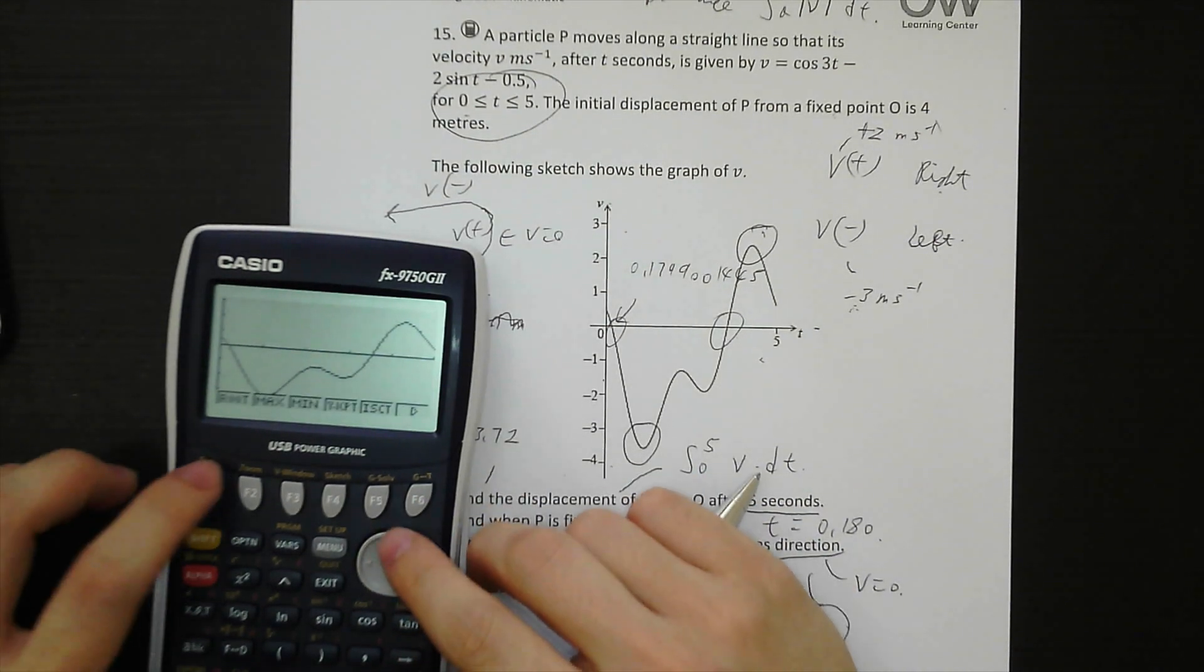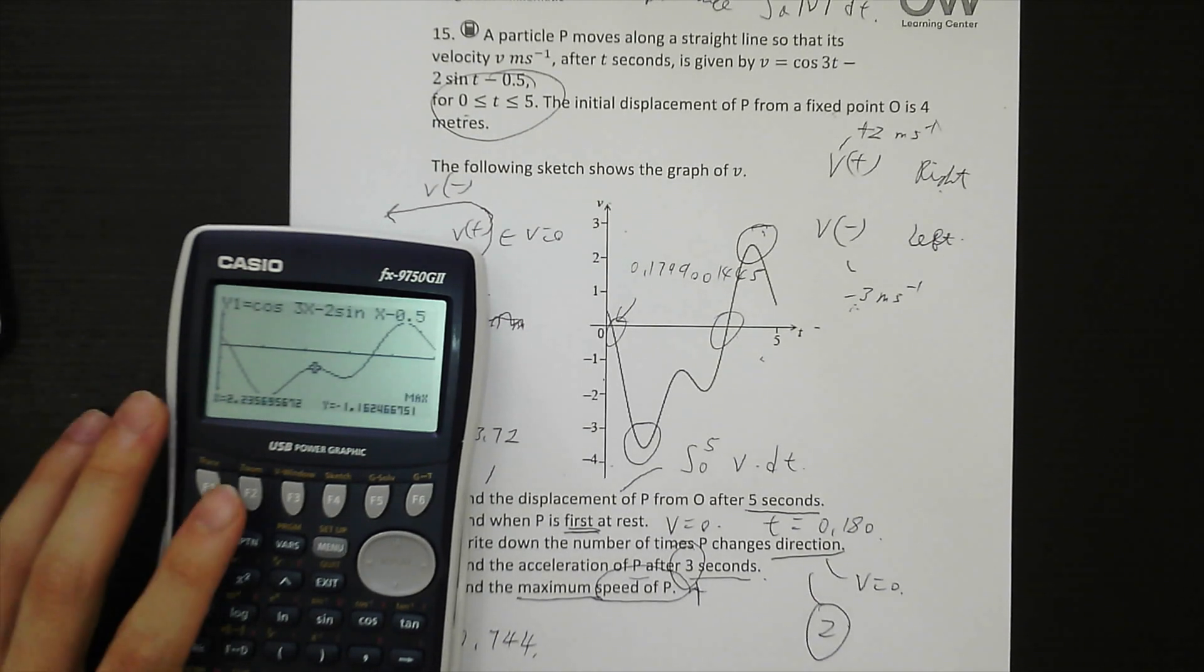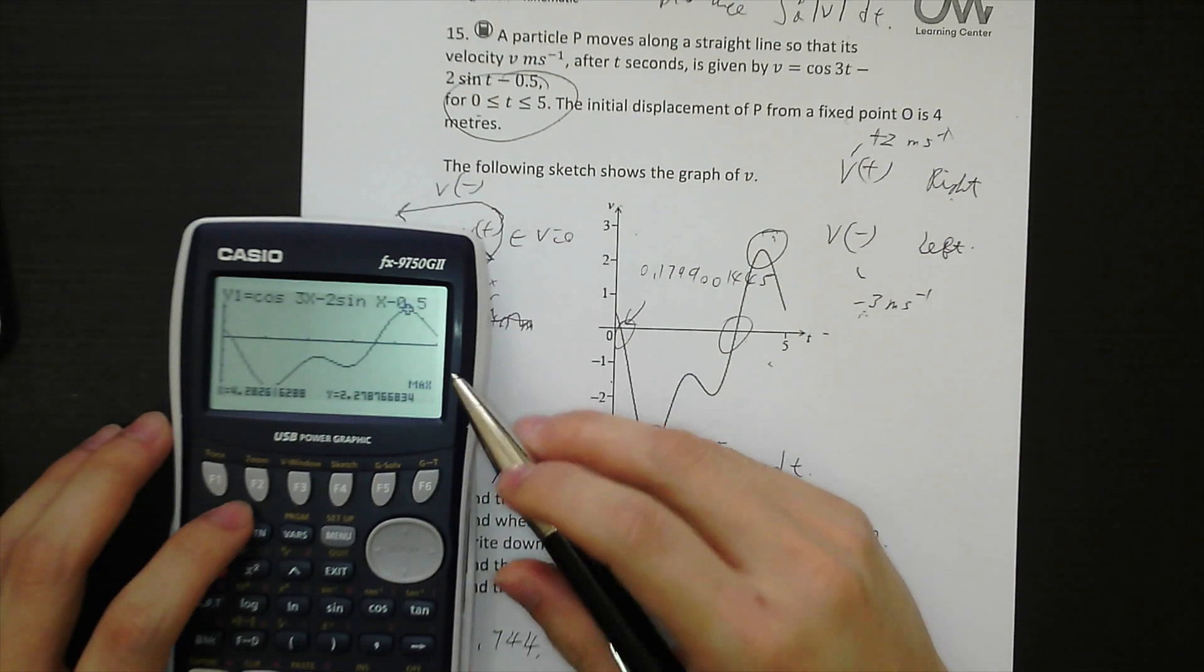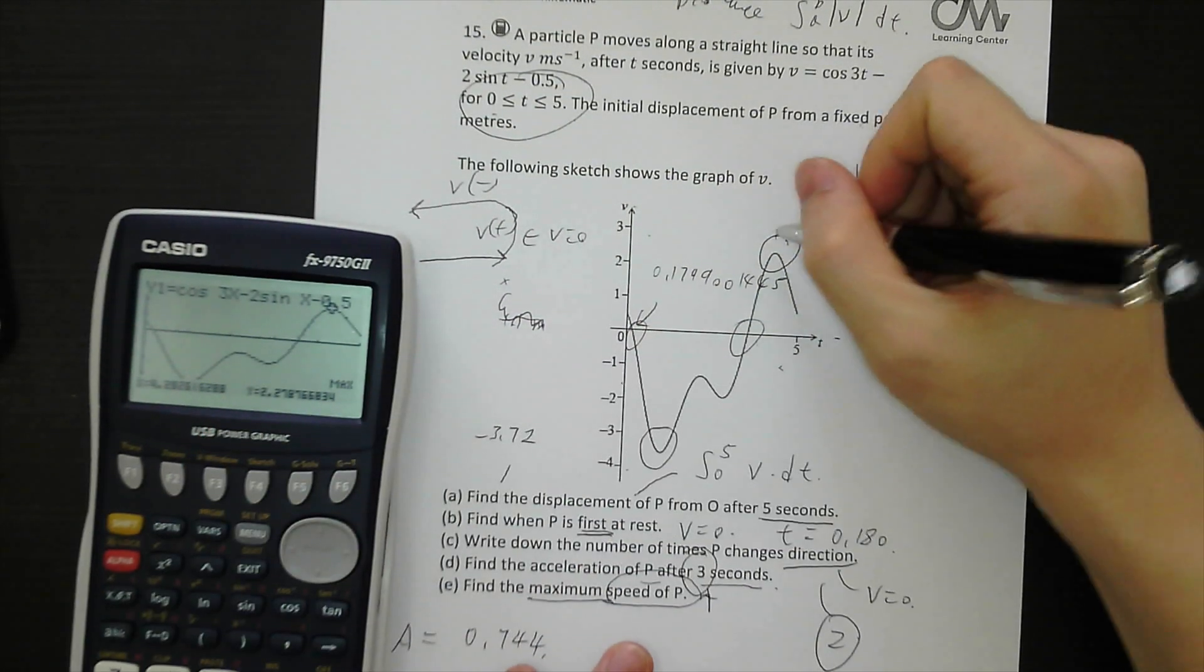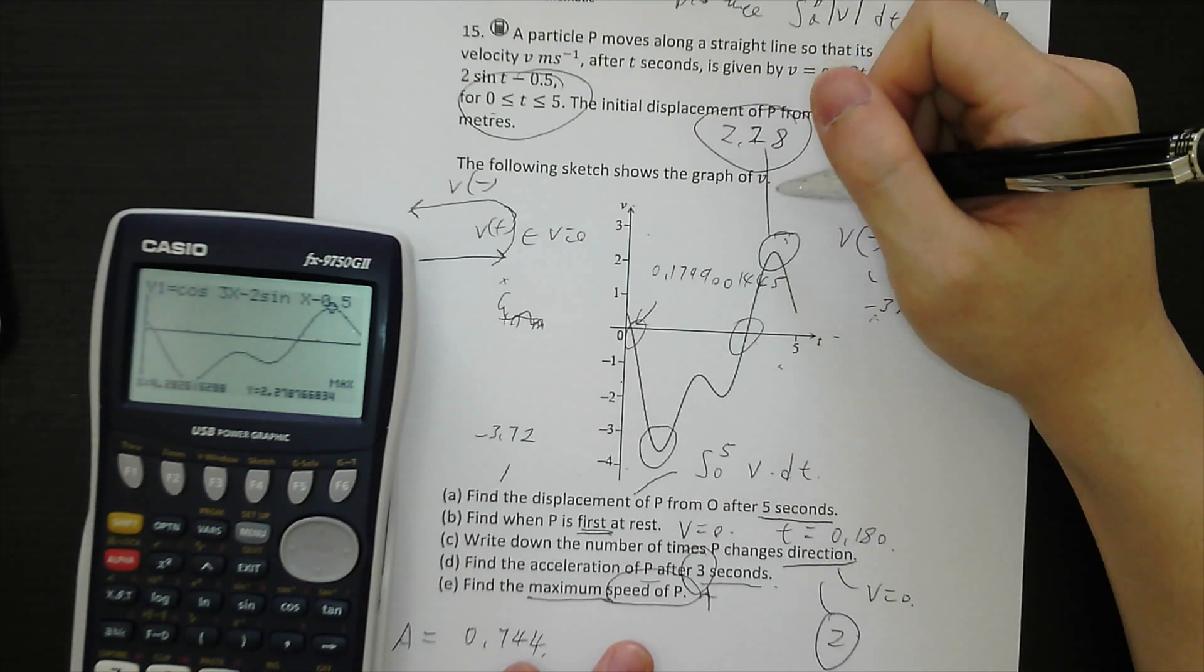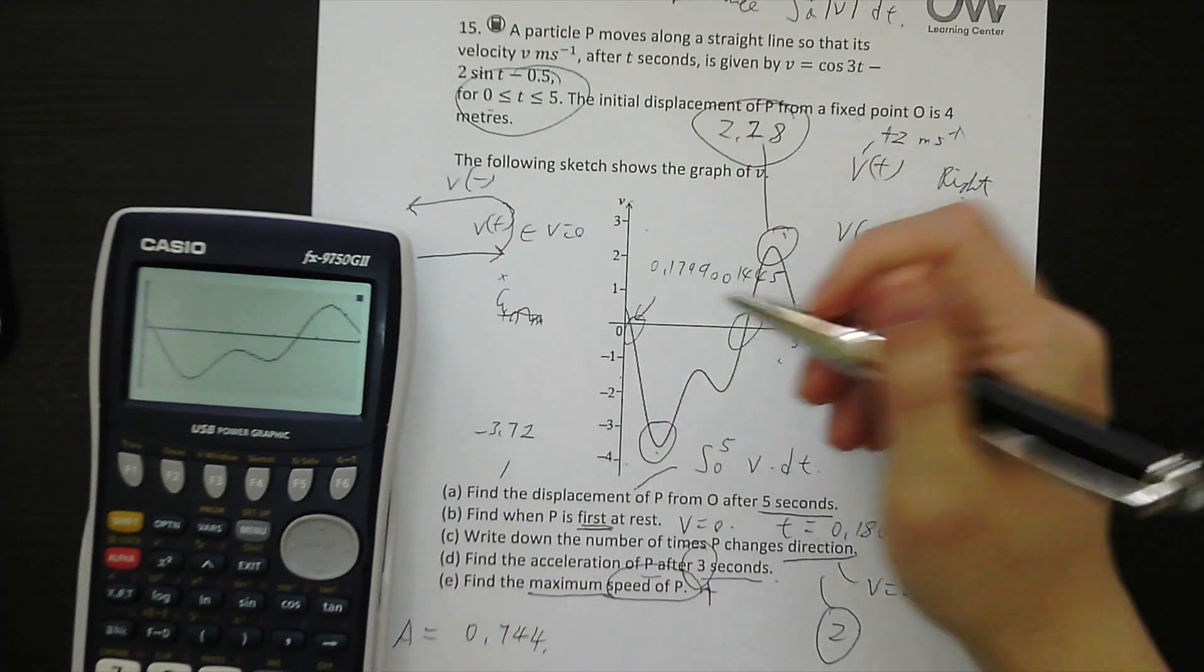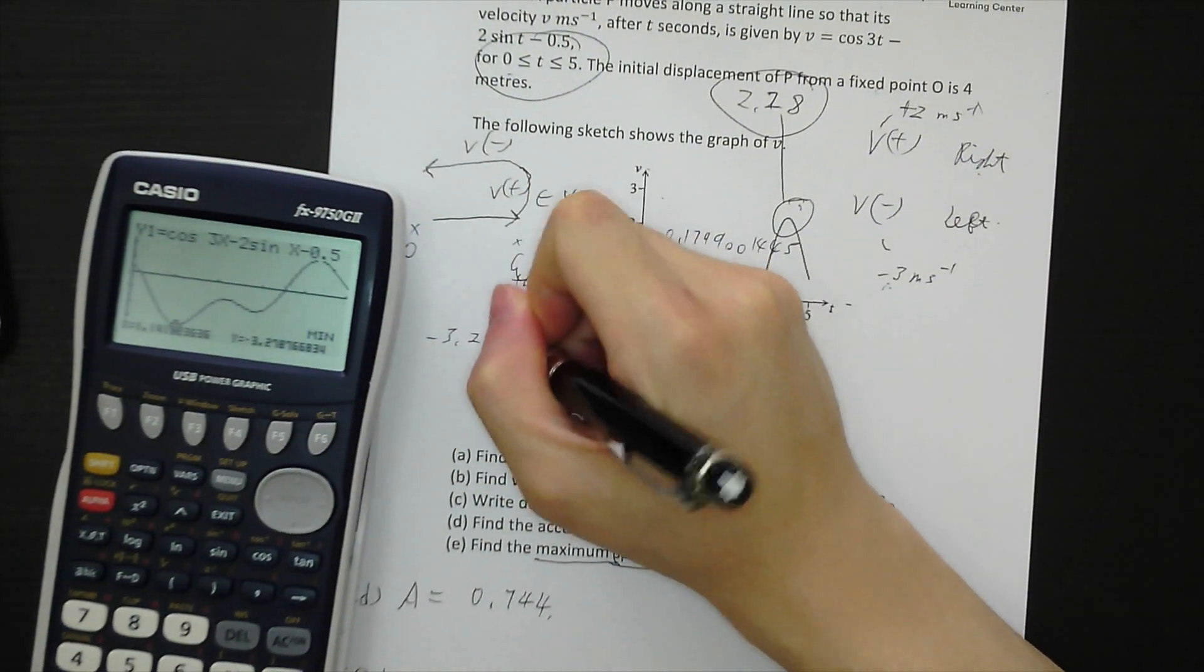So trace the maximum point. And this one, we look at the y values, 2.278. So 2.28. And this one is minimum point. This one will be negative 3.28.